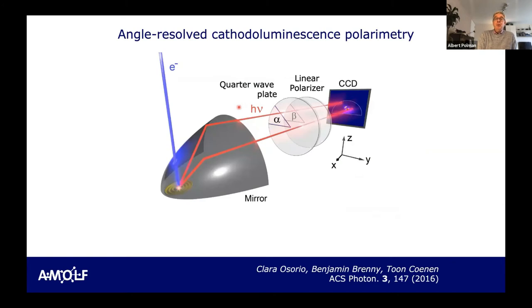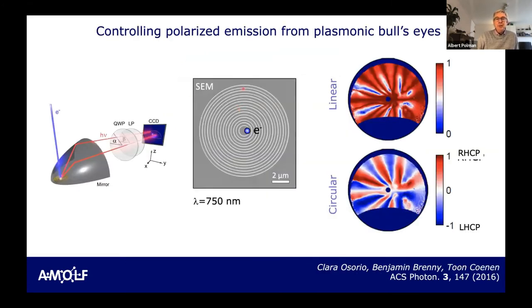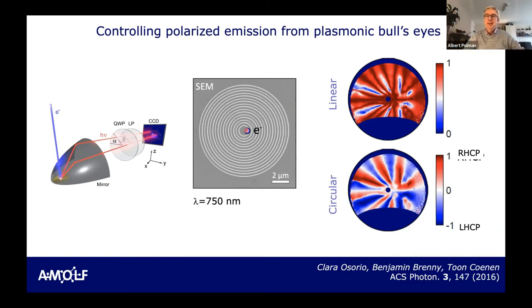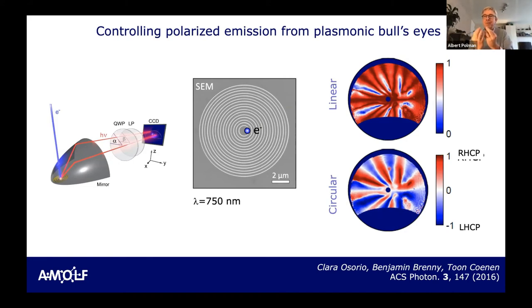We can also look at polarization of the cathodoluminescence. With a quarter wave plate and a polarizer, here for example is a bullseye structure made by focused ion beam in a gold surface. The electron beam creates dipole moments and also surface plasmons — light propagating over the surface of the metal — that scatter off the grating grooves. By parking the electron beam off-center we create a complex interference pattern of surface waves that scatter out and interfere in the far field. You see this angular polarization distribution — circular polarization, linear polarization, left-handed and right-handed light. You can create light fields that you could never create with optical experiments because the electron is a point source placed within an engineered surface structure.